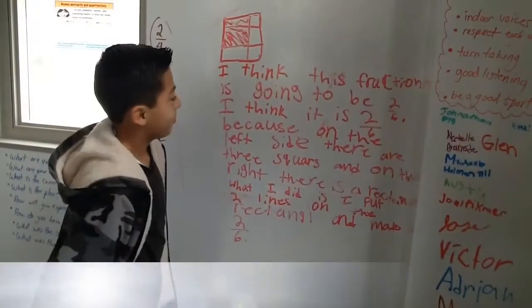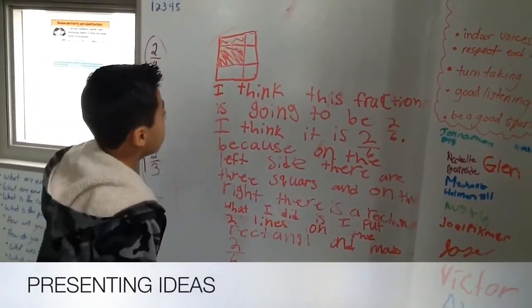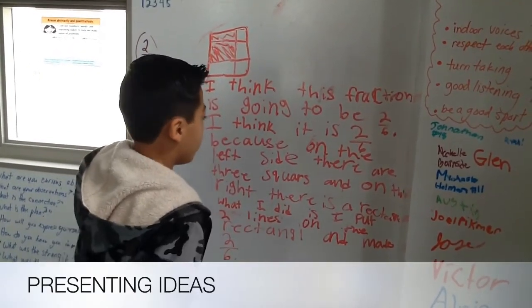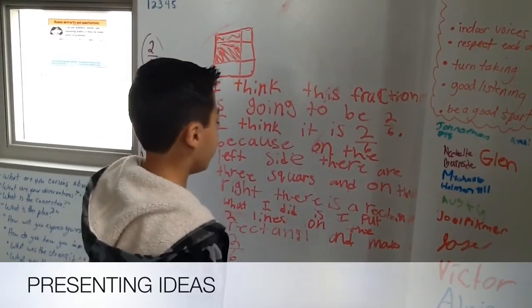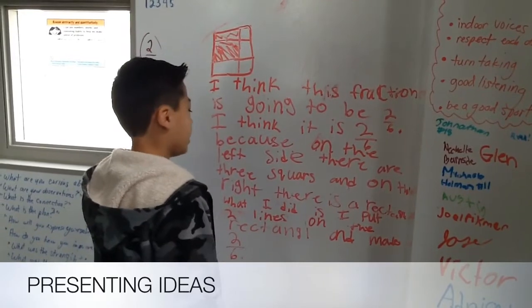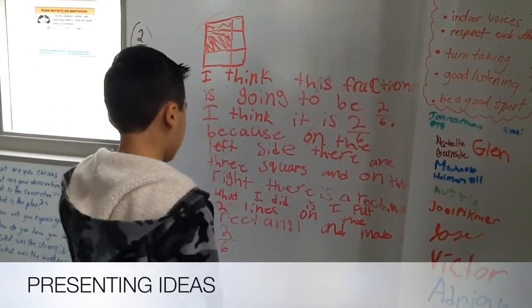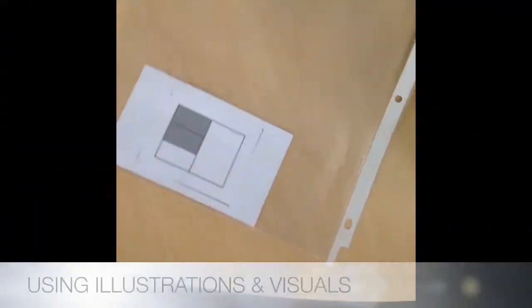Can you, Jose, explain your thinking? I think this fraction is going to be 2-6. I think it's 2-6 because on the left side there are three squares, and on the right side there is a rectangle. What I did is I put two lines on the rectangle and made 2-6. Okay, you put two lines, show me what you did here.